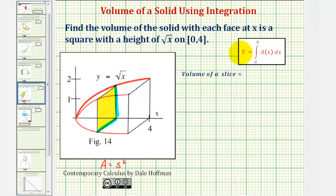So again, our approximate volume is going to be equal to the area of the face, which is the square root of x squared, times the thickness, which is delta x.